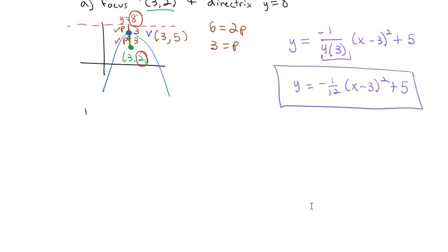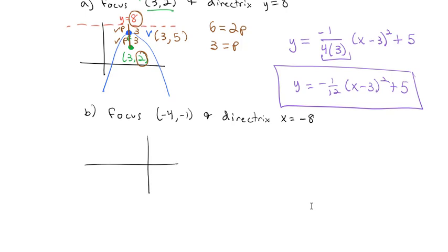Let's try one more example: find the equation of the parabola with focus at (−4, −1) and directrix x equals −8. Drawing a rough sketch, the focus is at negative 4, negative 1, and the directrix x equals −8 is a vertical line further to the left. So the parabola opens to the right through the center. We need to find the vertex coordinates.